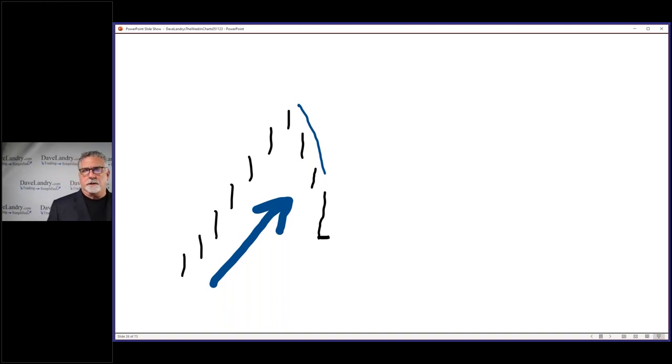As I said earlier, let's say you've got a wide range bar that closes poorly, kind of like that textbook TKO. Then you can put your entry right above the high. Now let's say you've got a close that looks like this. You're going to have to put your entry a little bit further away. You want the market to prove itself by triggering an entry.